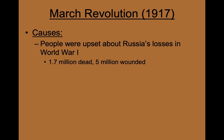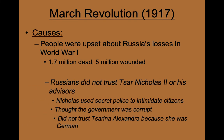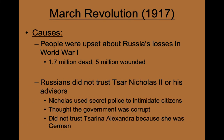Over 1.7 million of its soldiers were killed and an additional 5 million soldiers were wounded. In addition to the massive war casualties, the Russians did not trust Tsar Nicholas II or his advisors. The economic conditions in Russia were very poor and many people were complaining due to lack of food and available land.